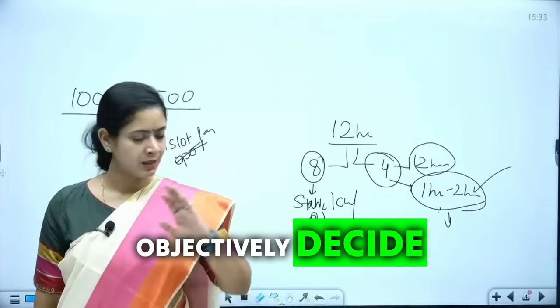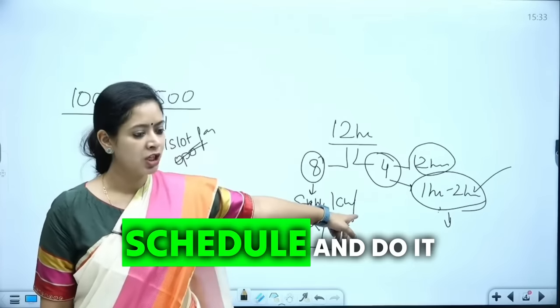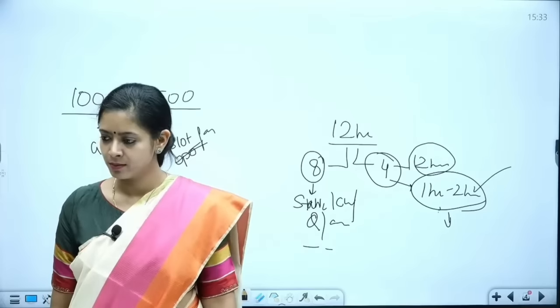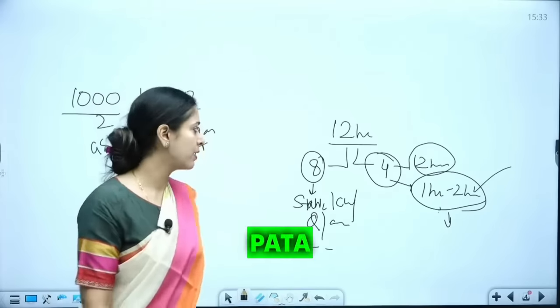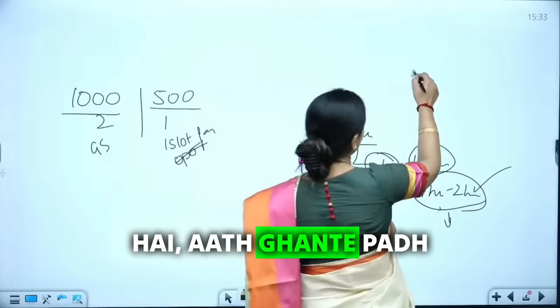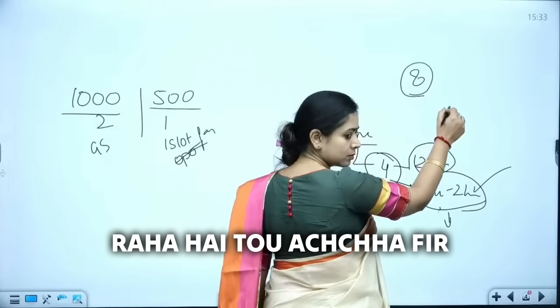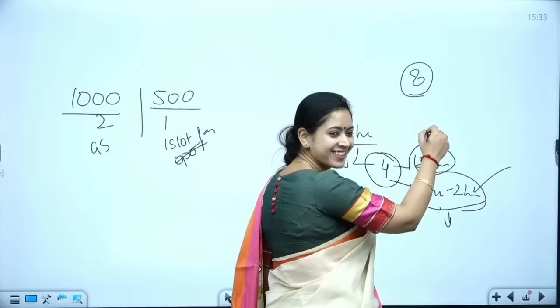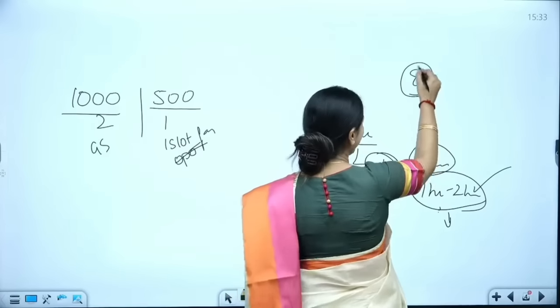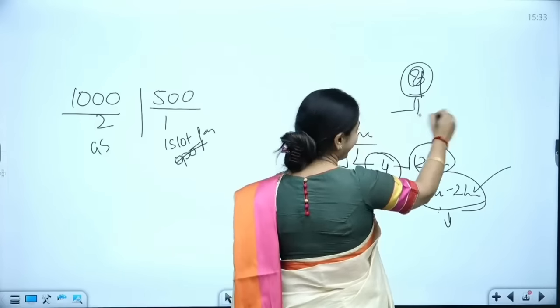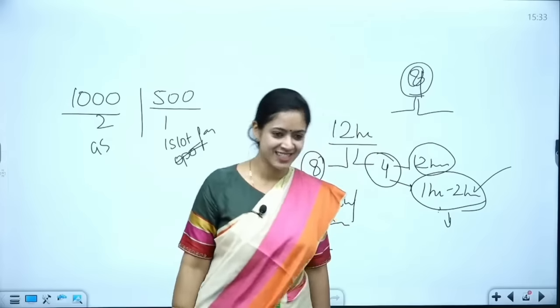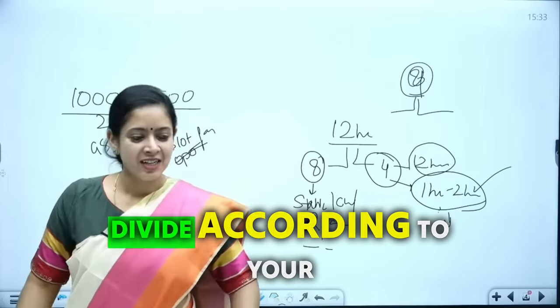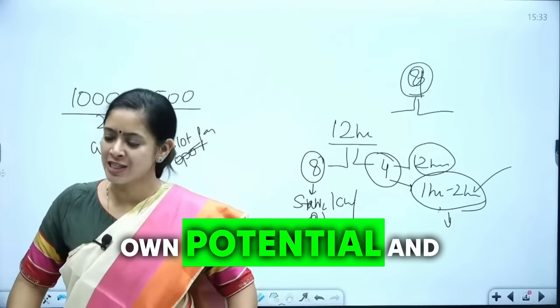Objectively decide, divide, schedule and do it. Simple. 12 hours change. Divide according to your own potential and things.